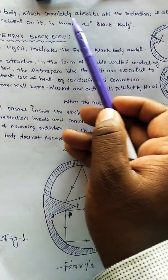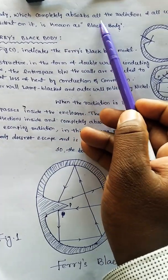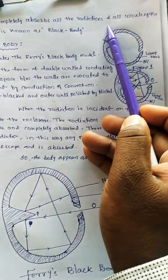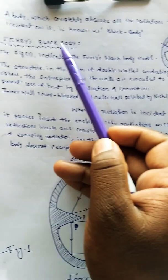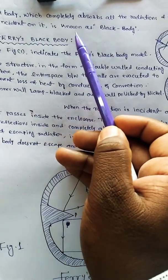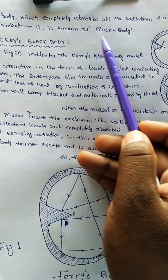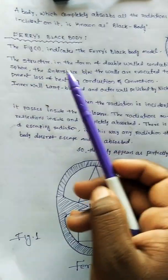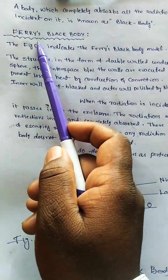A body which completely absorbs all radiations of all wavelengths incident on it is known as a black body.